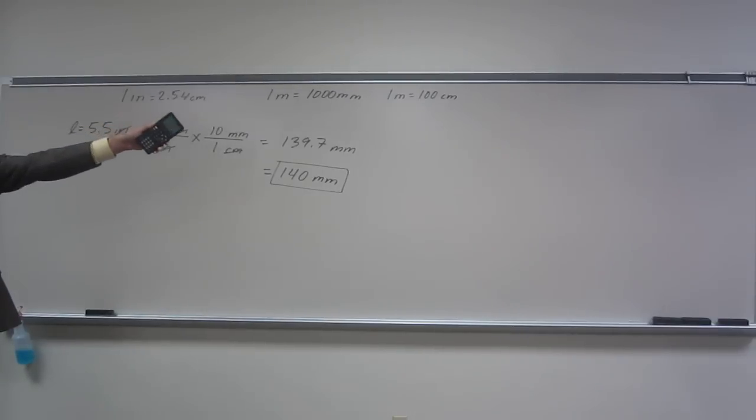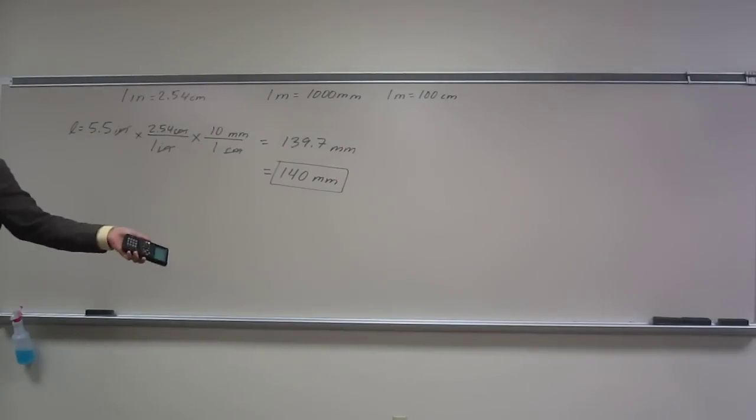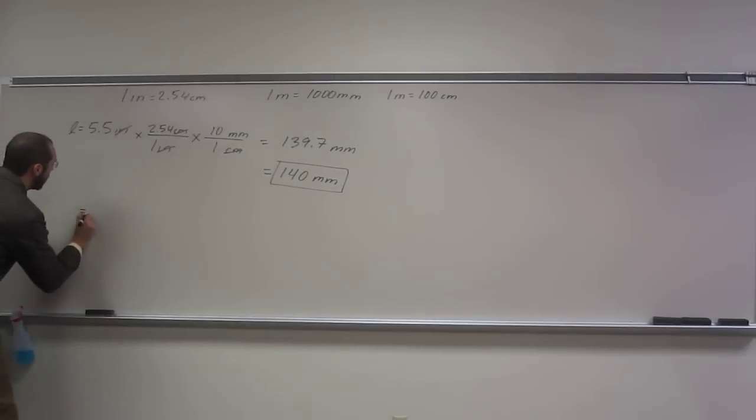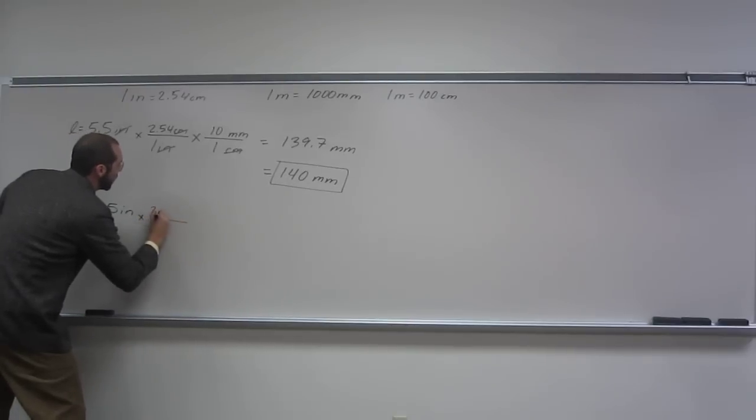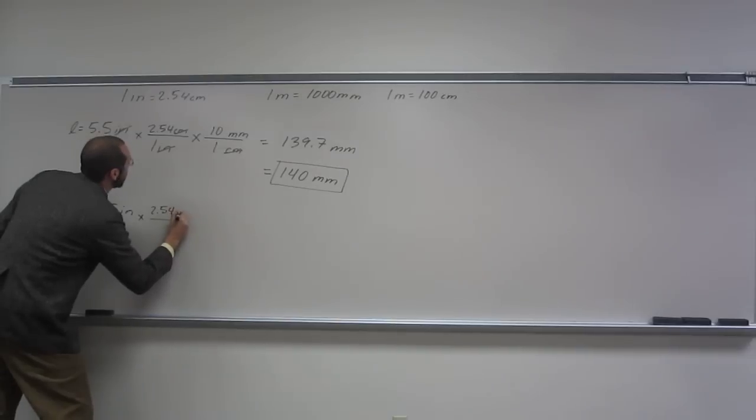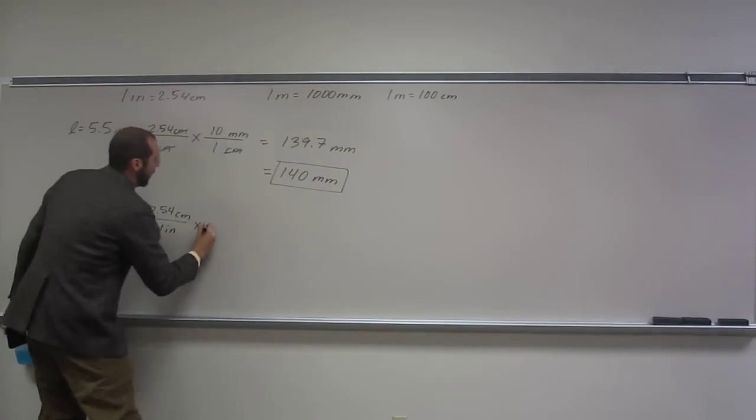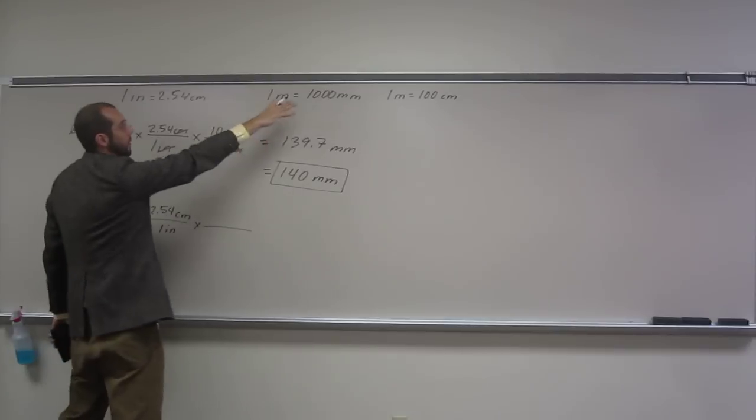Let's do it the other way we were talking about with those conversions that you probably already know, the 1 meter is 1,000 millimeters and so on. So 5.5 inches. This is the same problem, we're just doing it with a couple more steps. 2.54 centimeters, 1 inch. So instead of doing this, we're going to use those two.